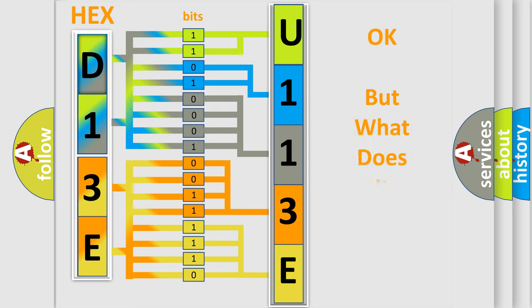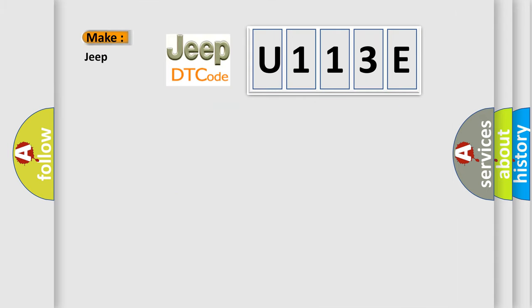The number itself does not make sense to us if we cannot assign information about what it actually expresses. So, what does the diagnostic trouble code U113E interpret specifically for Jeep car manufacturers?